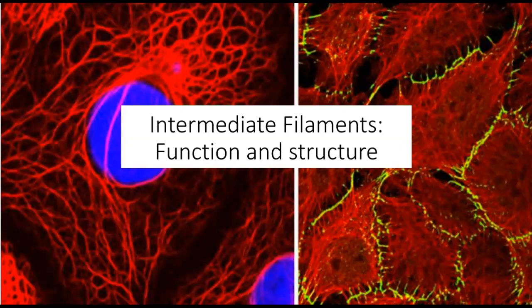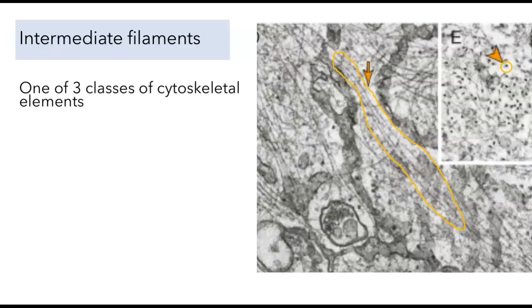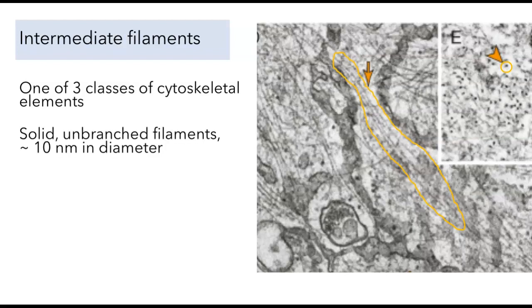The focus of this video is intermediate filaments. These are one of three different classes of cytoskeletal elements found in cells. These electron micrographs show us what intermediate filaments look like in longitudinal and in cross-section. They're solid, unbranched filaments about 10 nanometers in diameter.